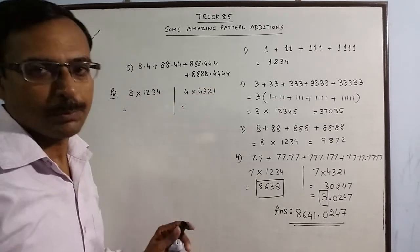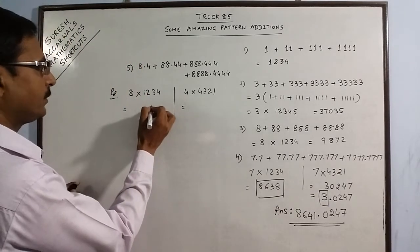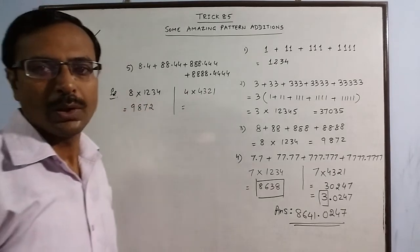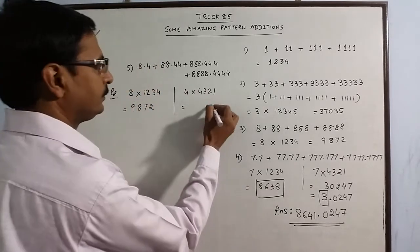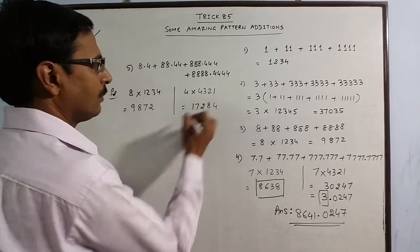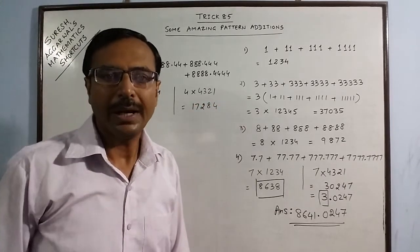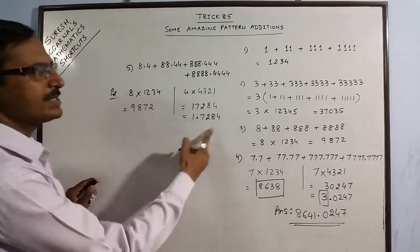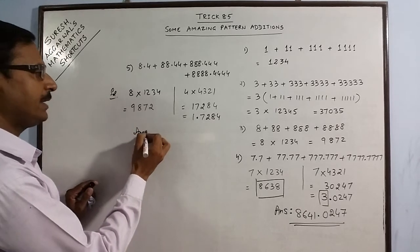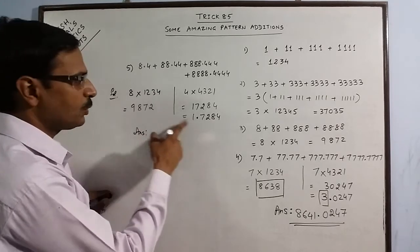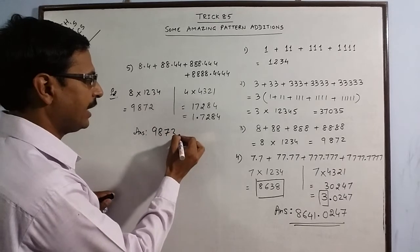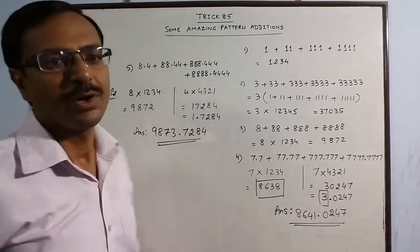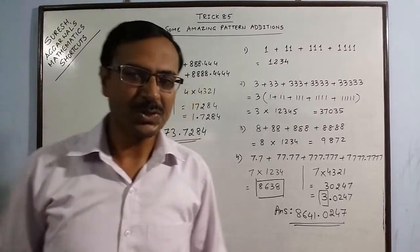First product: 8 × 1234 = 9872. Second product: 4 × 4321 = 17284. Place a decimal after one place: 1728.4. Add to 9872: 72+1=73, so 9873. Final answer is 9873.7284.